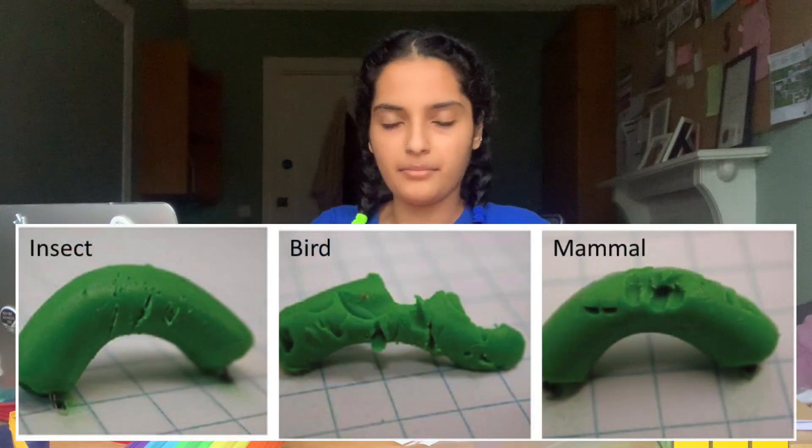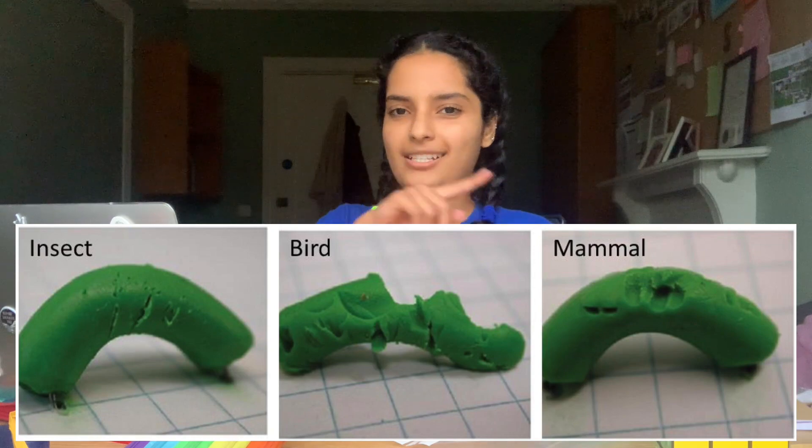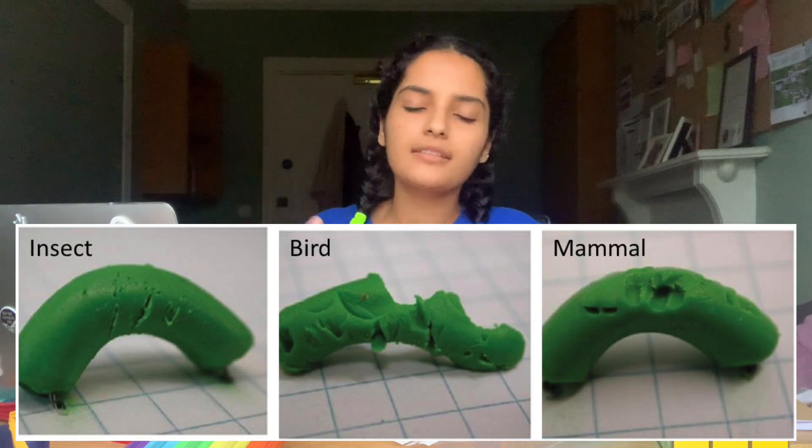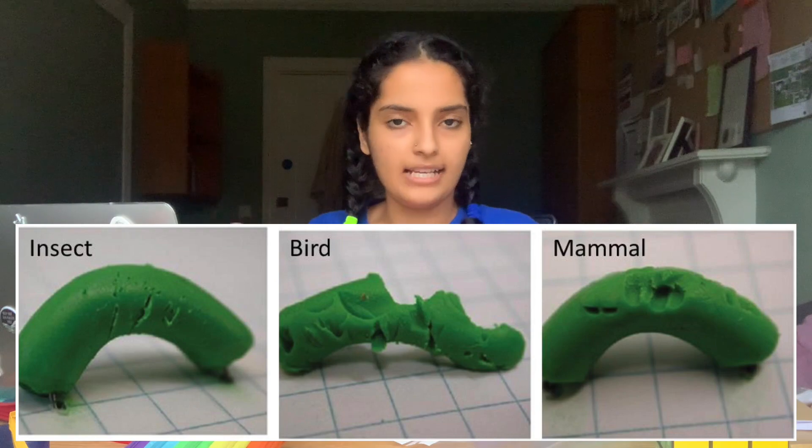Since we're going to be making our caterpillars out of plasticine, it's possible for us to count the number of bite marks from any kind of predator - for example, insects, birds, or mammals. Each of these predators has their own characteristic bite marks, and this makes it possible to determine whether an insect, bird, or mammal has attacked our caterpillars. So here are the components of our field experiment.